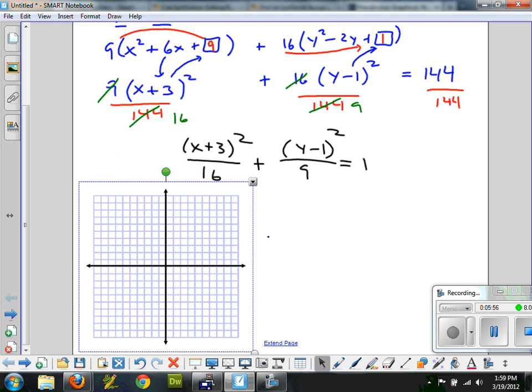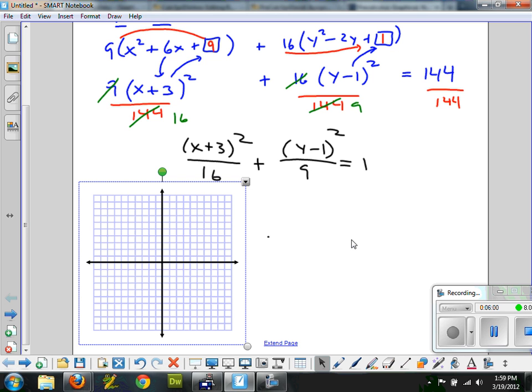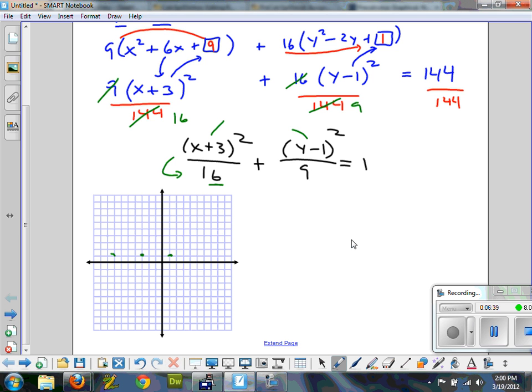After completing the square, I now need to graph this. What makes zero? There's the center. Negative three and positive one. So I mark the center there. I have under the X, square root of 16, four. Four left, four right. One, two, three, four left. One, two, three, four right. So my vertices, which are part of the ones that I need to answer, are along this axis because this is the bigger number, the elongated part. So our vertices are at negative seven, one, and at one, one. That's the first part of the answer.